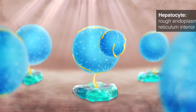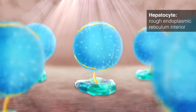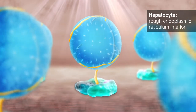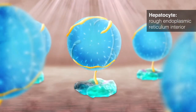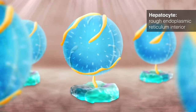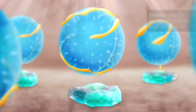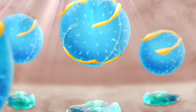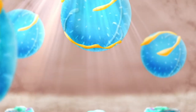ApoB is synthesized in the liver, where it combines with the other constituent parts to form VLDL, a triglyceride-rich particle and a precursor of LDL.